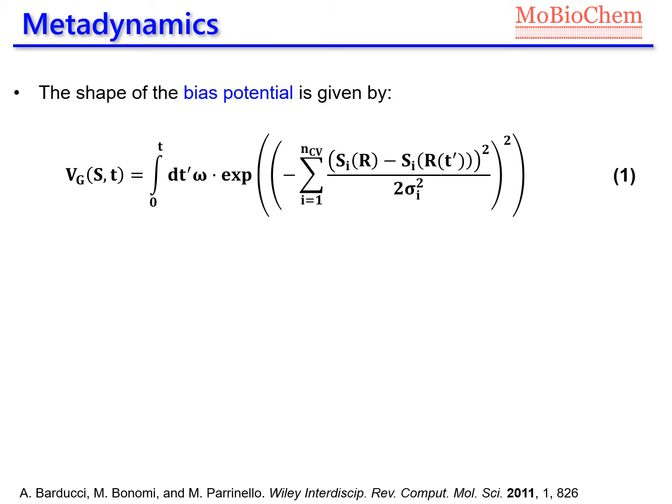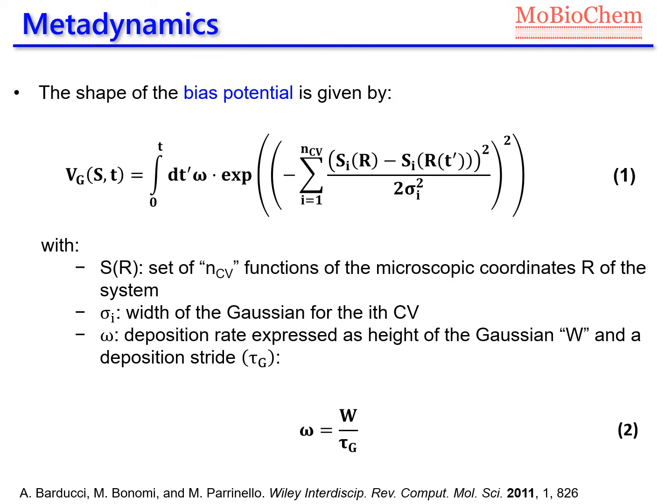Equation 1 shows the shape of this Gaussian function, where s represents the set of collective variables, sigma the width of the Gaussian function for each of the collective variables, and omega the deposition rate.